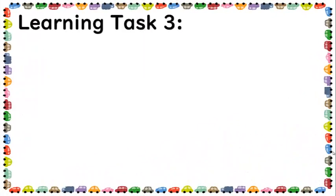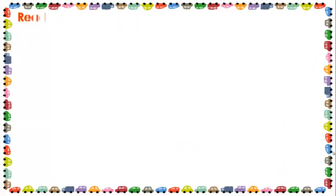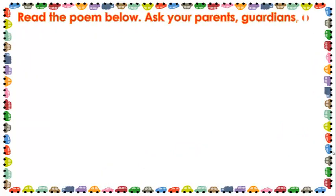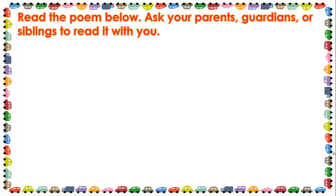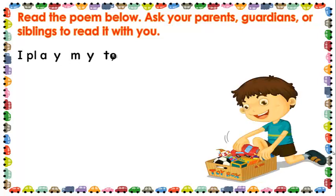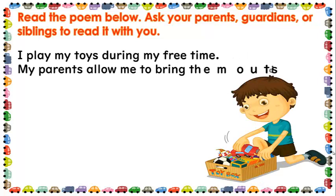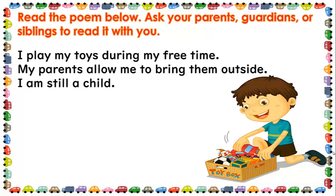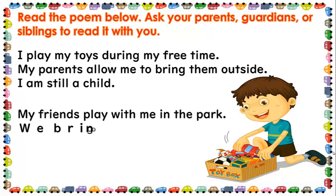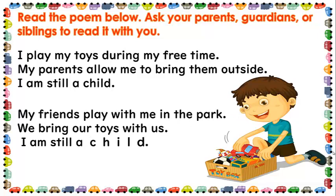We're now in learning task number three. Read the poem below. Ask your parents, guardians, or siblings to read it with you, or you may read it after me. I play my toys during my free time. My friends allow me to bring them outside. I am still a child. My friends play with me in the park. We bring our toys with us. I am still a child. Good job, kids!